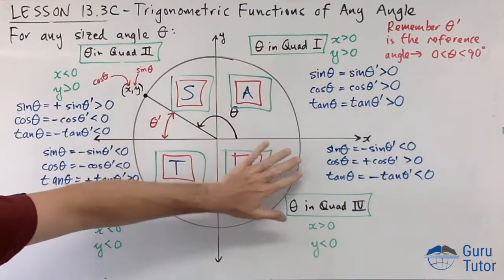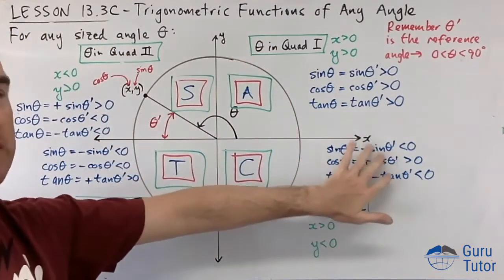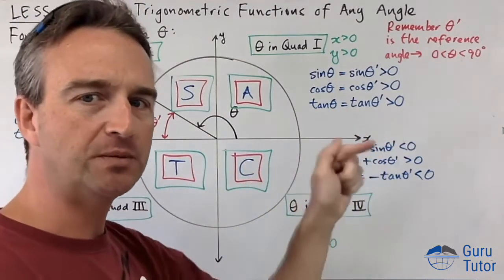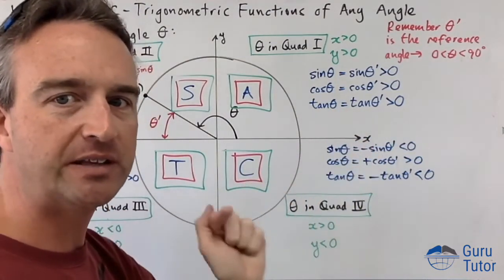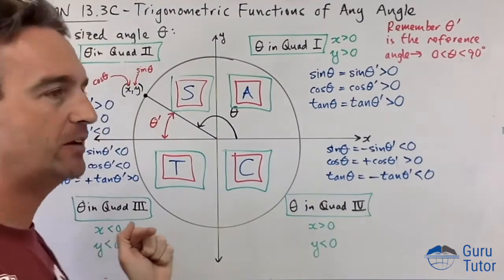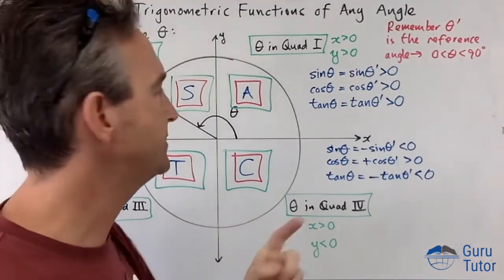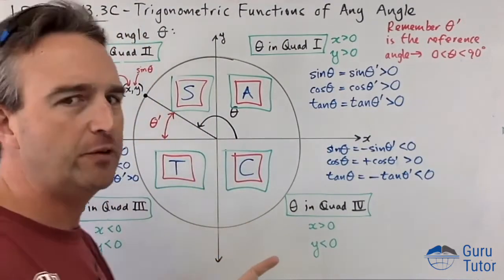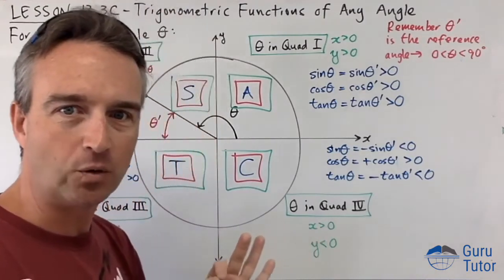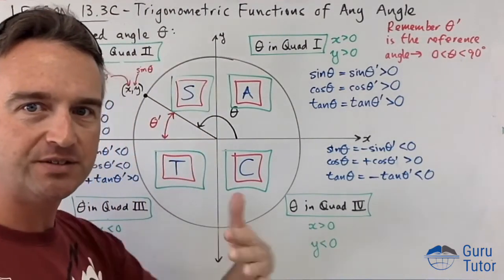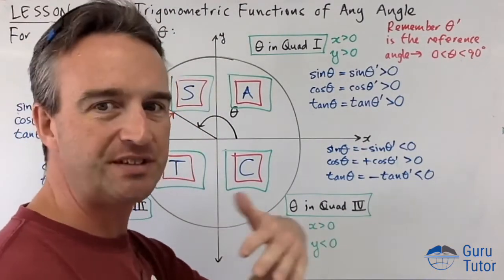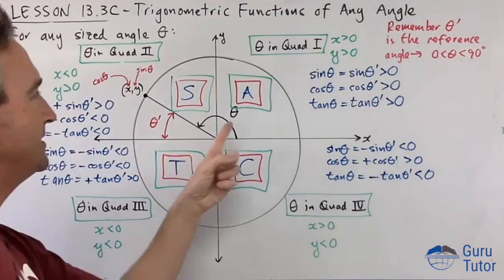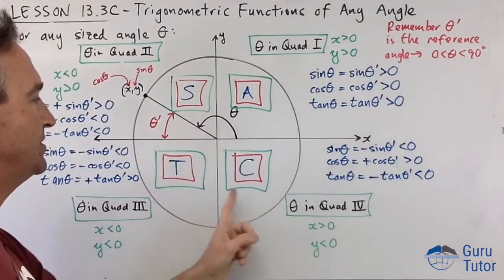Sine, cosine, and tan equal sine, cosine, and tan of the acute reference angle with a plus or minus at the front — that's what you need to determine. To remember which is positive in each quadrant, use the mnemonic ASTC: All Stations To Central. All positive in Q1, Sine in Q2, Tan in Q3, Cosine in Q4.